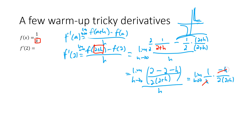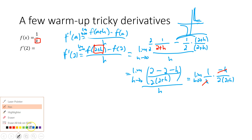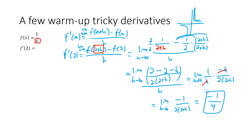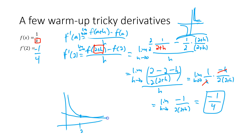After canceling the h's we have the limit as h approaches 0 of -1 / [2(2+h)]. Now we can plug in 0 for h without dividing by zero: -1 / (2 × 2) = -1/4. So f prime of 2 equals -1/4. That makes sense — looking at 1/x in the first quadrant at x = 2, the tangent slopes are negative and getting shallower.